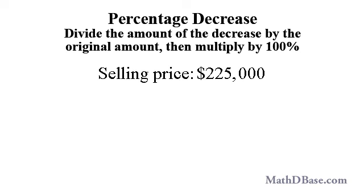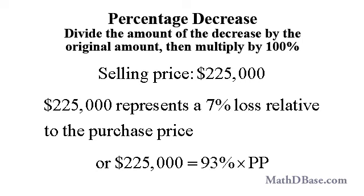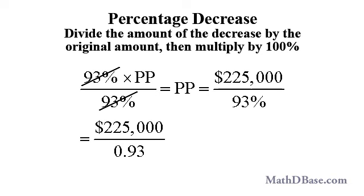Verena sold his house for $225,000 at a loss of 7%. How much did he pay for the house? $225,000 is 93%, 100% minus 7% of Verena's purchase price, PP. So $225,000 is equal to 93% times PP. Dividing the selling price by the current value in percentage terms relative to the purchase price, we get $225,000 divided by 93%, which is equal to $225,000 divided by 0.93. So Verena paid $241,935.48 for the house.